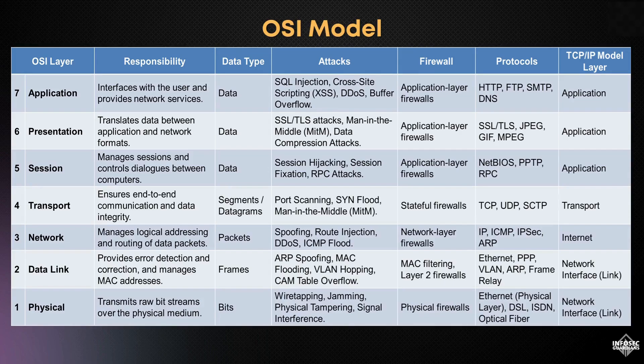Understanding each layer of the OSI model is crucial for identifying and mitigating vulnerabilities within a network. By implementing the appropriate security measures at each layer, you can ensure a more secure and reliable communication process across your network.